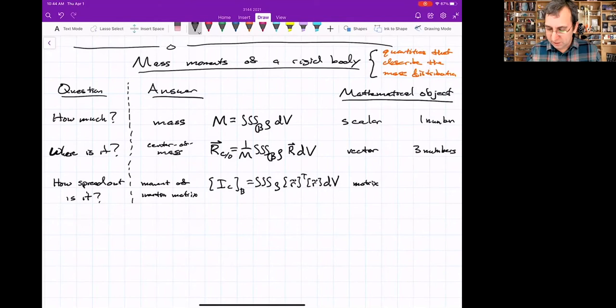As a mathematical object, what is this? This is a matrix. A scalar has one number, a vector has three numbers, a matrix—it's a three by three matrix—has nine numbers.